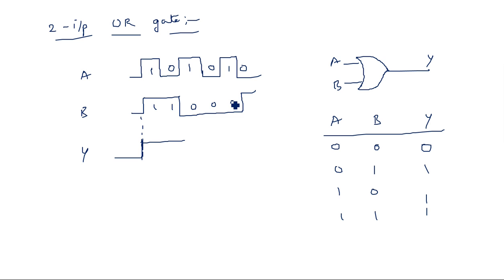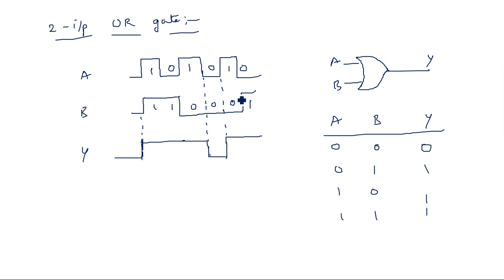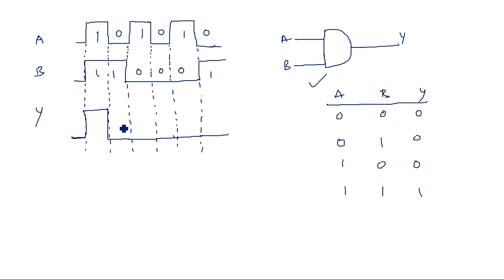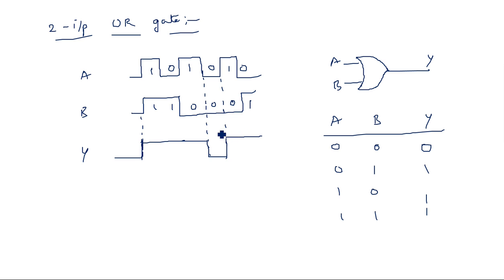Let us check the output waveform for the OR gate. Starting from here: we have one one so output is one; in the second case we have zero one, which also gives output one because if any one of the inputs is one, output is one. Only when all inputs are zero is the output zero. At the point where both inputs are zero, output is zero. Again it is one one. This is the output waveform for the OR gate — notice the difference from the AND gate output.